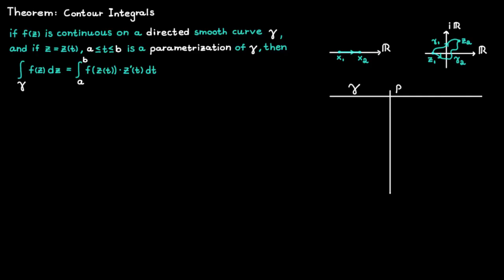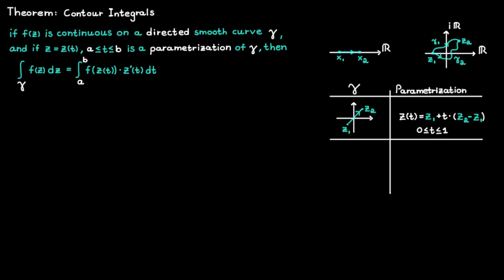It is useful to know some standard parameterizations. If you would like to parameterize the straight line that goes from c1 to c2, then the parameterization is going to be equal to the starting point c1 plus t times the end point minus the starting point, and the t value will go from 0 to 1. If we insert t equal to 0 we get the starting point, and if we insert t equal to 1 we get the end point. We do this to preserve the direction of the curve.